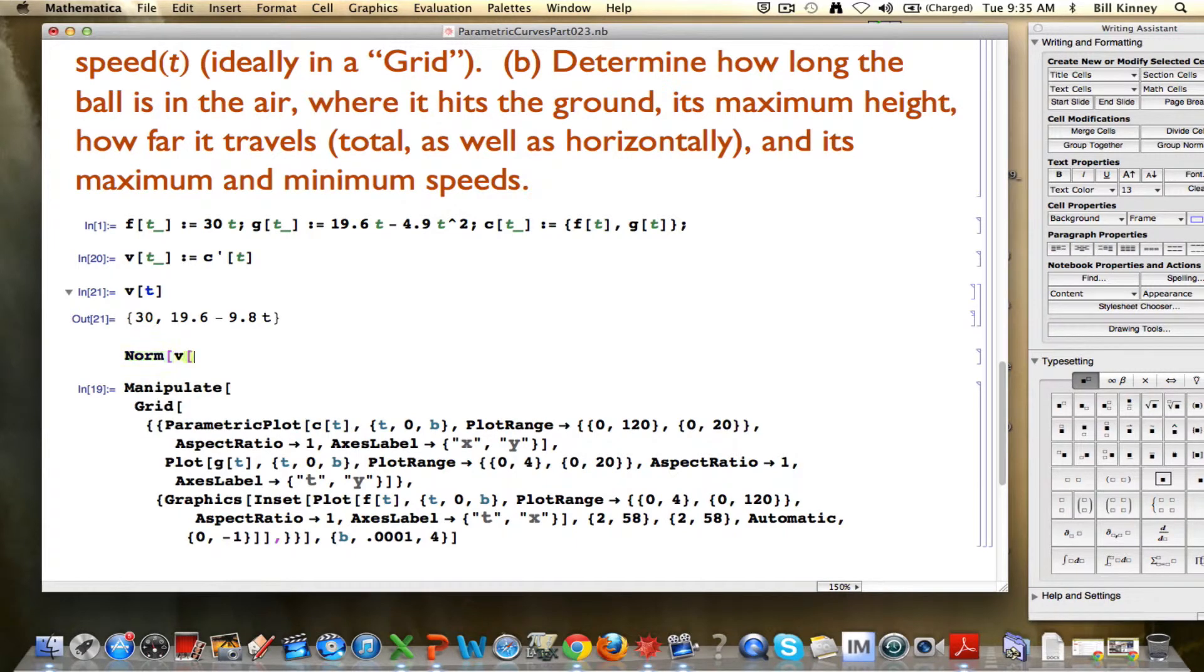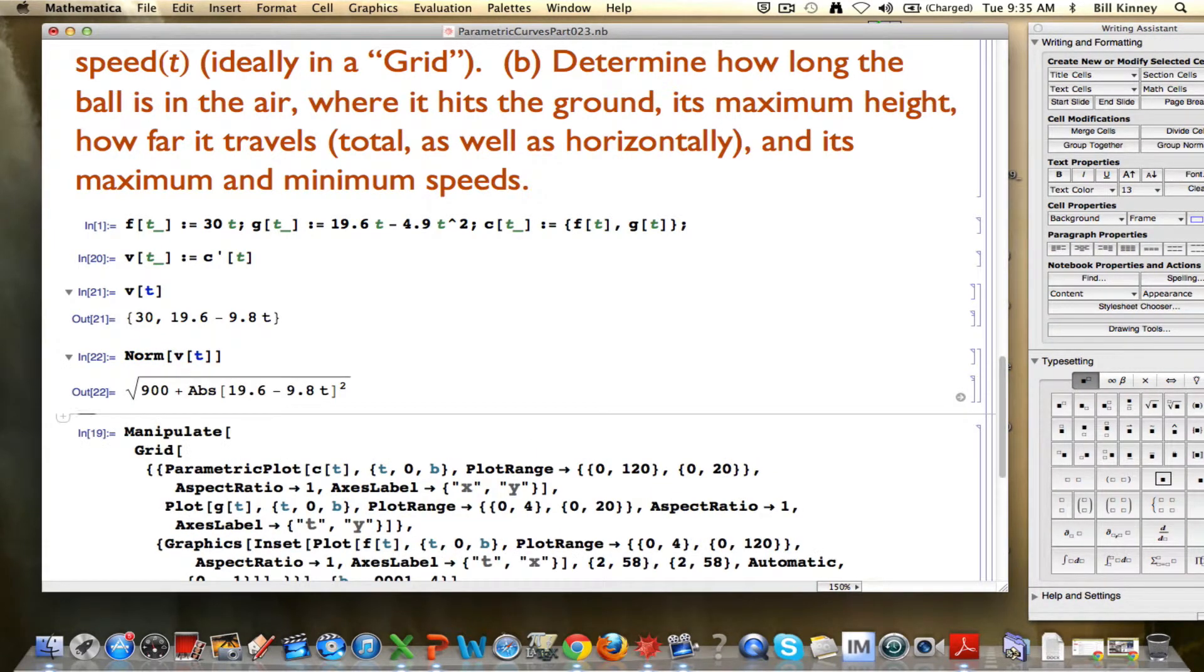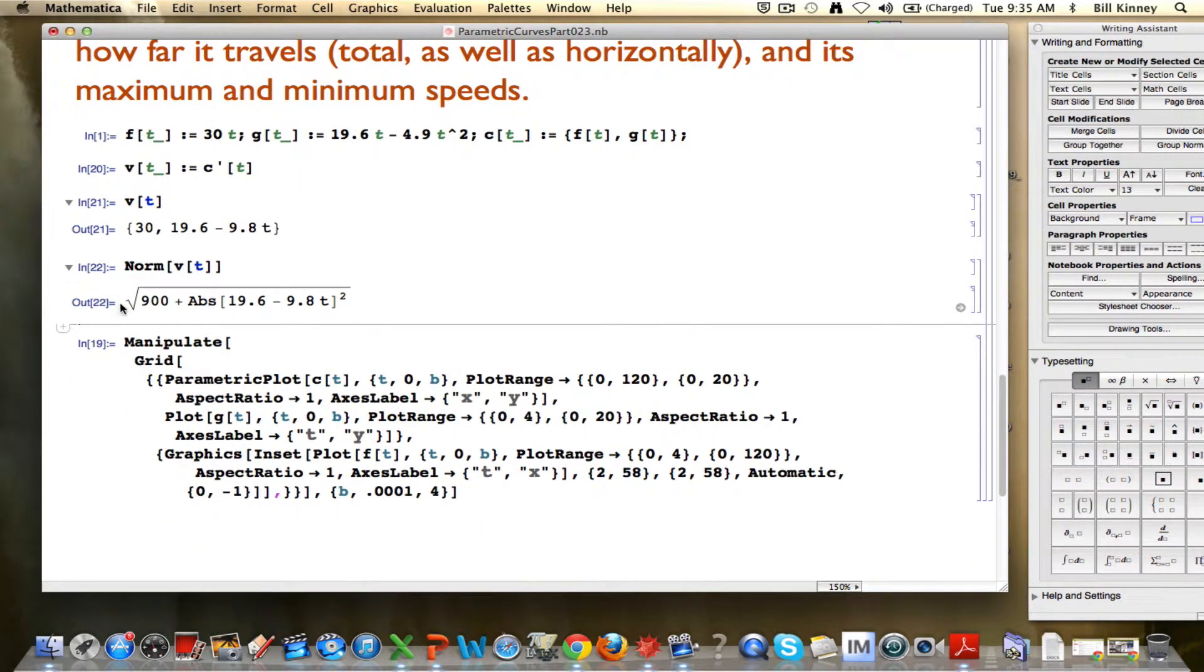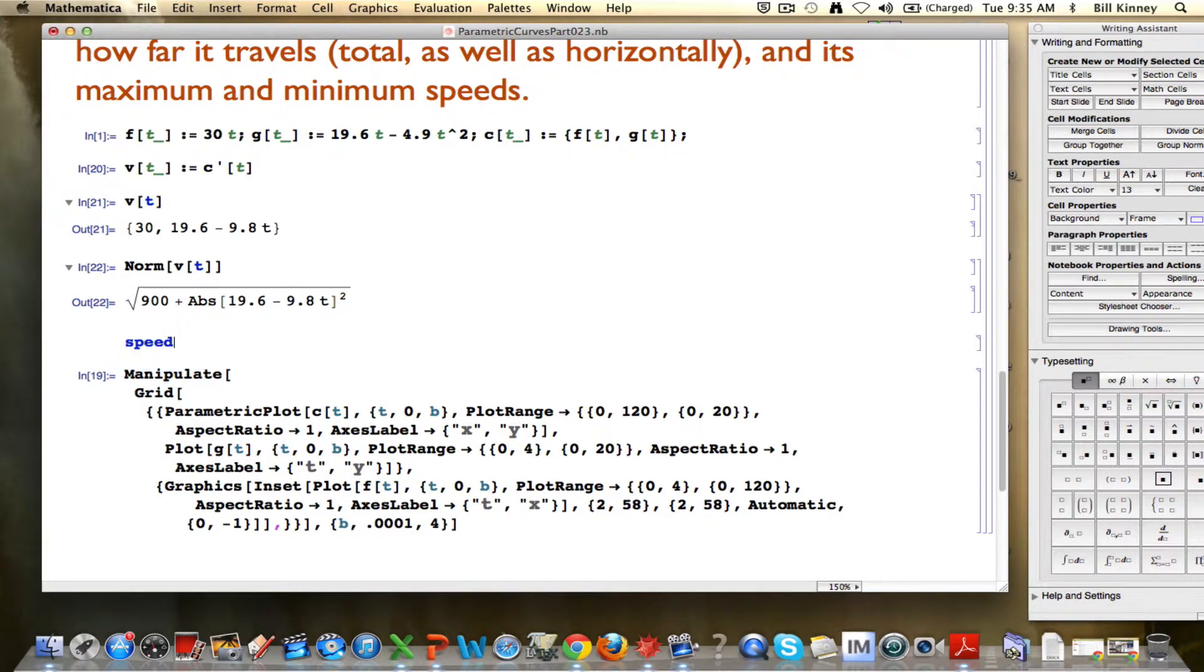The norm of this vector is going to be the speed. Here is the norm. It's this quantity. I actually don't need the absolute value symbol there in Mathematica here when I am going to define the speed now. Because I'm squaring. And in fact, I'm ultimately going to integrate the speed and absolute values are difficult to deal with in integration, including for Mathematica sometimes.